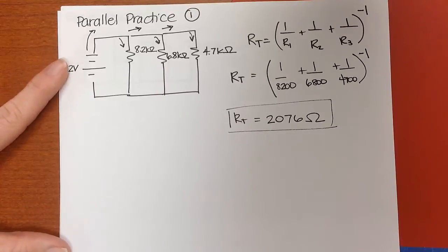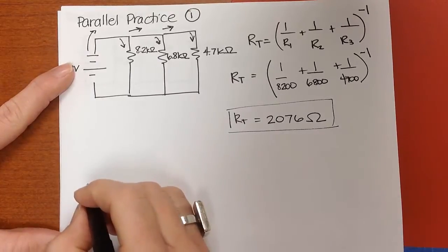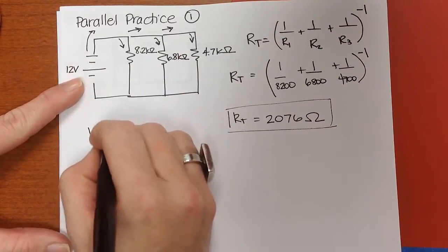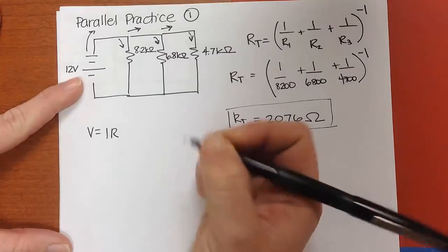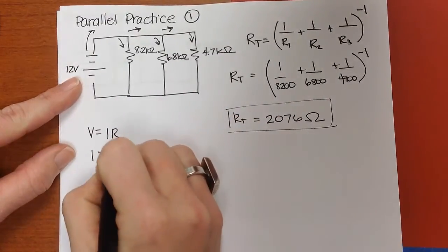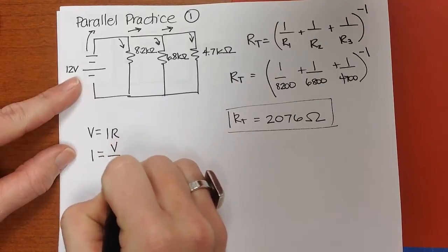So now let's go ahead and find the total current. The total current can be found from Ohm's Law, V equals IR. So that means that I is equal to V over R.